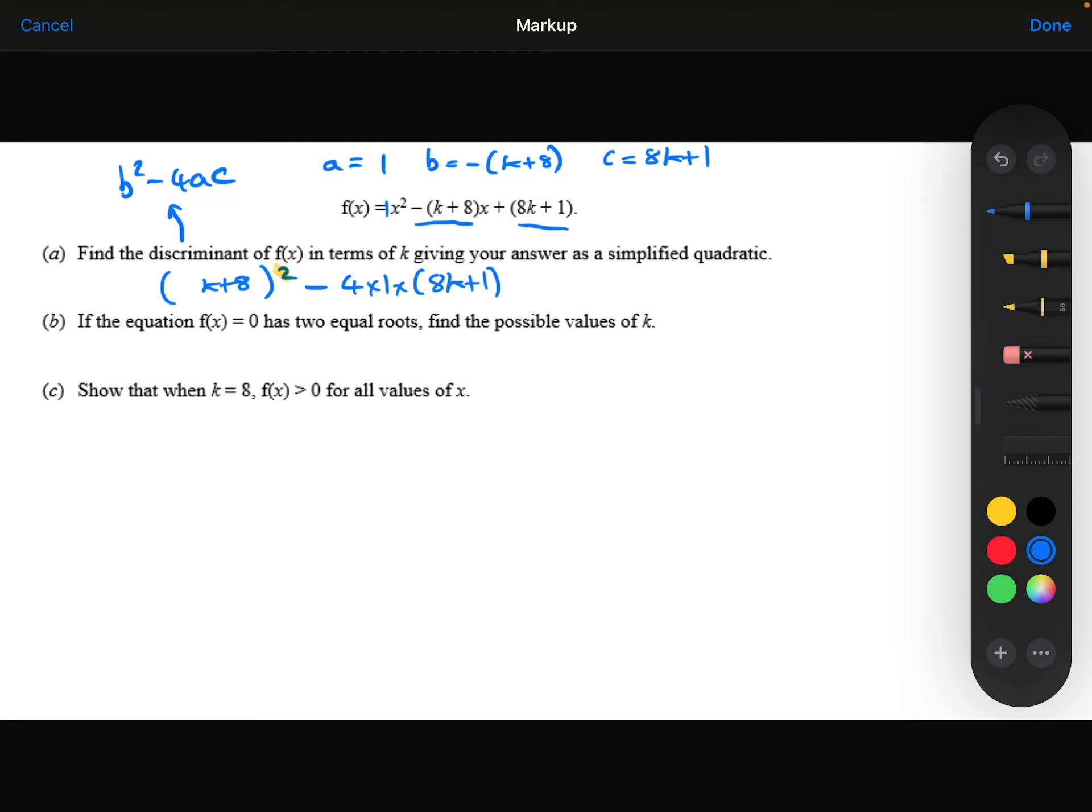Let's expand that out. The k squared is k squared. Then we've got k times 8, which is 8k. We'll have two of them, so that's 16k. And then we've got 8 squared, which is 64.